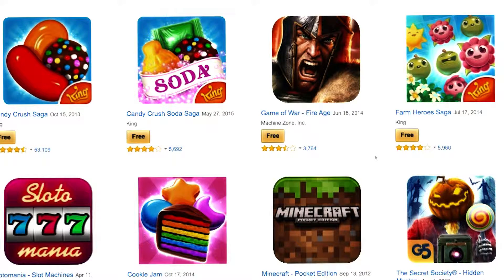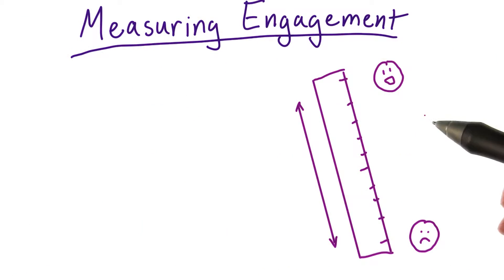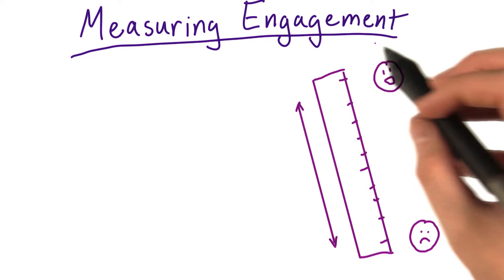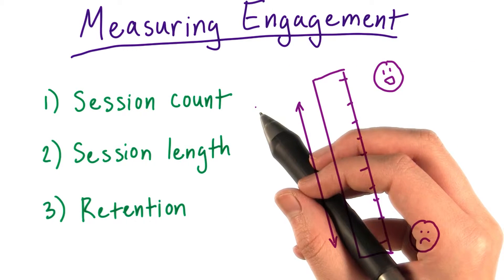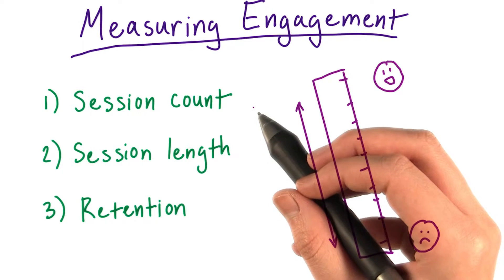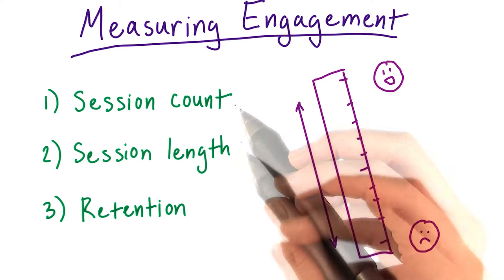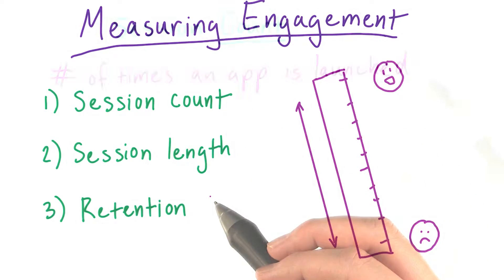If the game has a rating close to five stars, it's probably pretty fun. And if it's lower, then maybe there's something the users don't like about it. We can also look at how long and how often players use our game to measure engagement. Here are some terms we use to measure it: session count, session length, and retention.